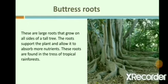Buttress roots. These roots are large, wide roots on all sides of a tall tree. The roots support the plant and allow it to absorb more nutrients. They prevent the tree from falling over. Such roots grow out from the tree trunk and help to support the tree. These roots are found in the trees of tropical rainforests.